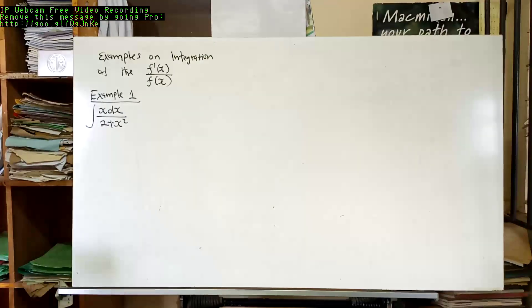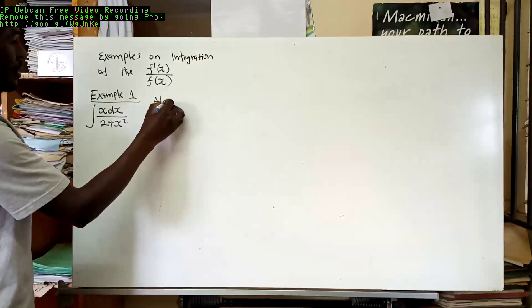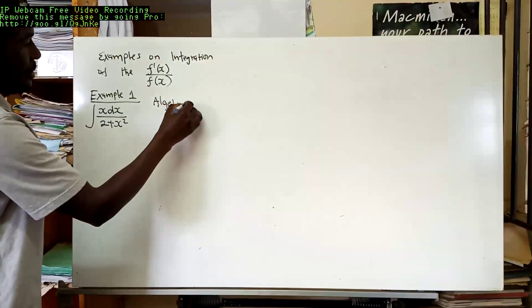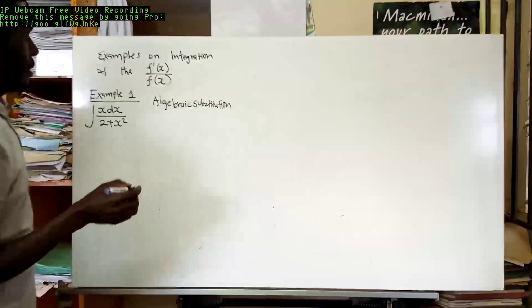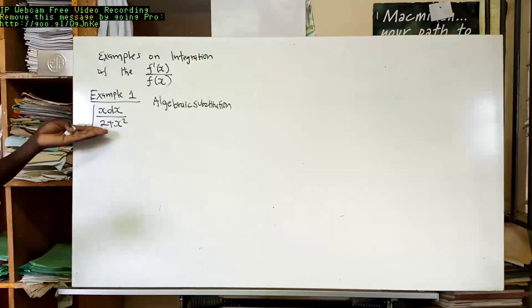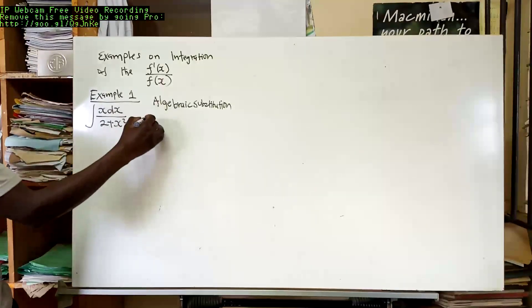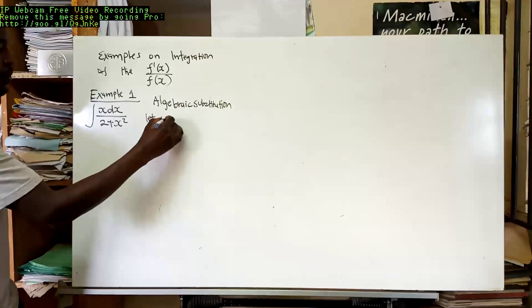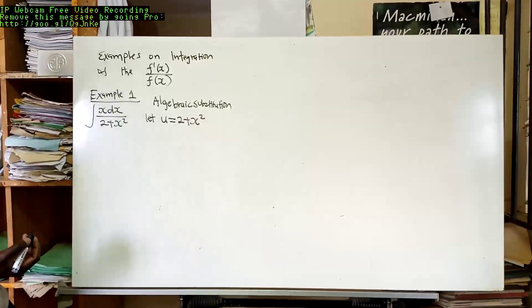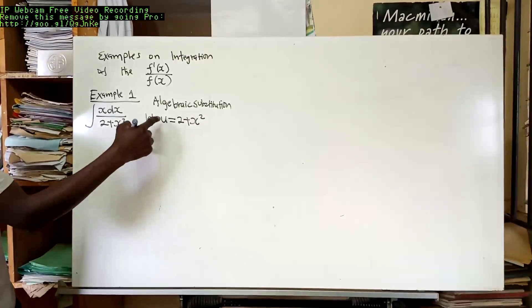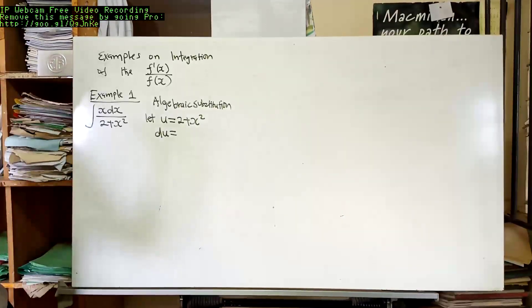The method we are going to use here is algebraic substitution. What we are going to do is replace the denominator — that replacement is what we call substitution. So we let u, which is our denominator, equal 2 plus x squared.